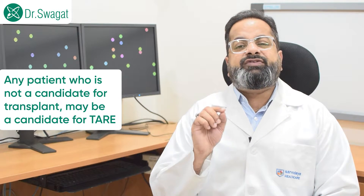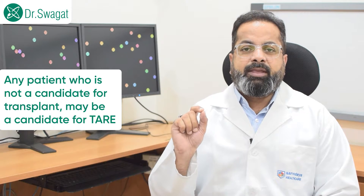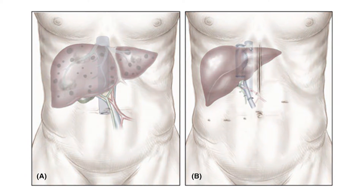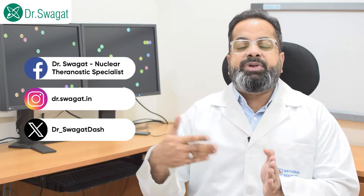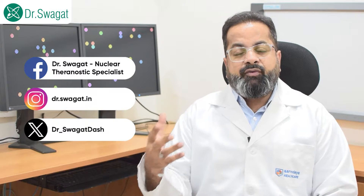Any patient who is not a candidate for transplant may be a candidate for TARE. When a patient is borderline for transplant — that means there are certain biological or disease behaviors because of which transplant cannot be done at this point of time — TARE can act as a bridging procedure. After TARE, in the subsequent period of time, that patient may become eligible for liver transplant. Or in those cases when nothing can be done and the patient is not a candidate for any other therapy, TARE can be done.